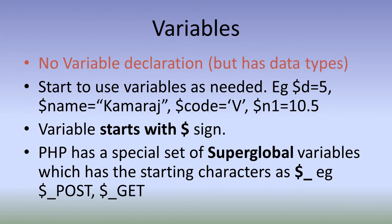How will we be using variables? We have to use variables as needed. For example, $d equal to 5 if we write, it will be a valid PHP statement. We need not declare $d before using $d. Likewise, for string variables, that is also the same. $name equal to Khamaraj, $code equal to, within single quotation, I have given capital V. Both single quotation and double quotation are used for strings.